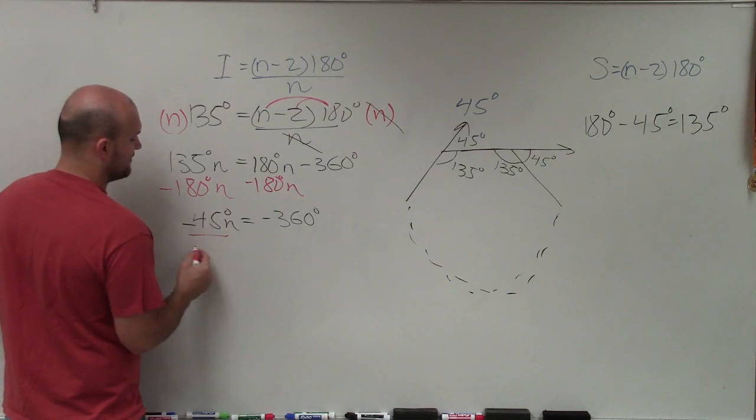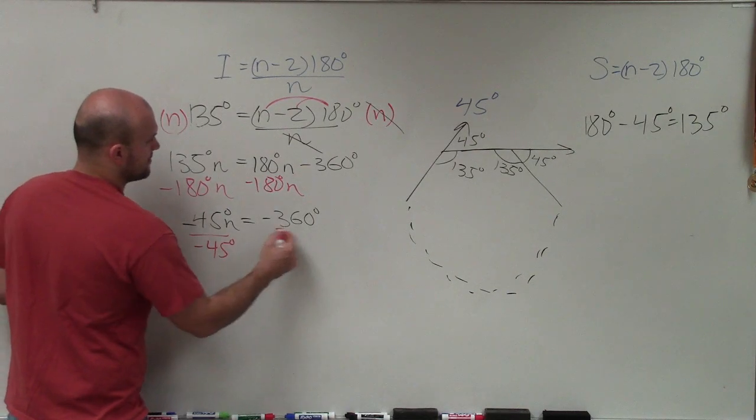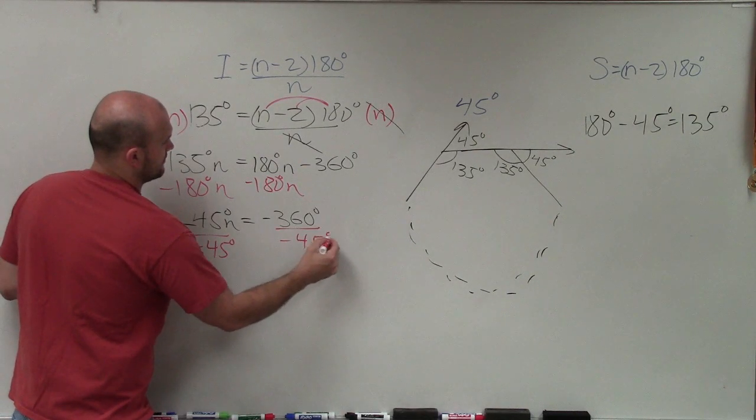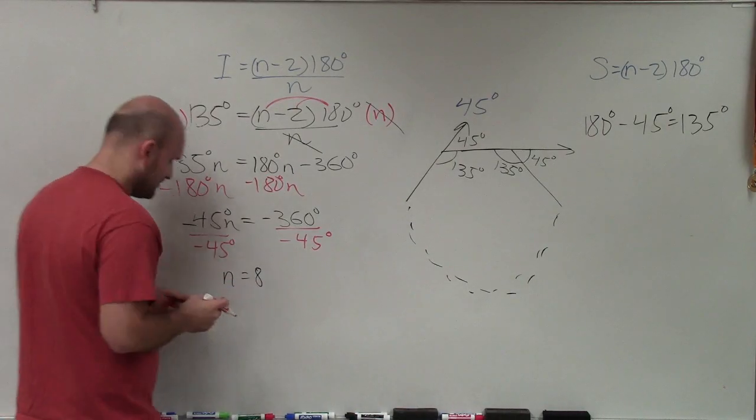Now, to solve for n, I divide by negative 45 degrees. And therefore, n equals 8.